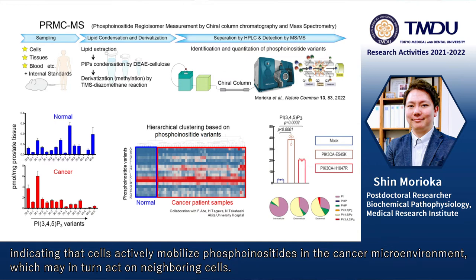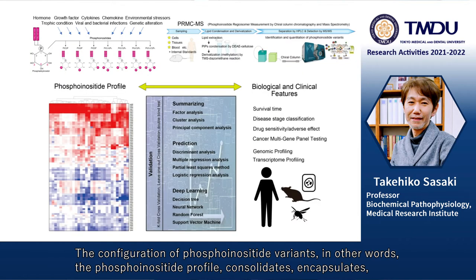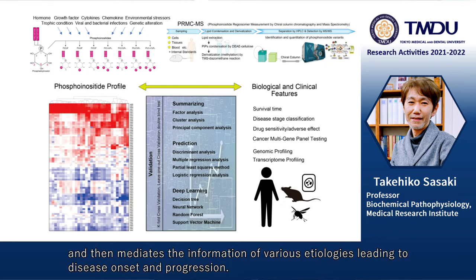indicating that cells actively mobilize phosphoinositides in the cancer microenvironment, which may in turn act on neighbouring cells. The configuration of phosphoinositide variants — in other words, the phosphoinositide profile — consolidates, encapsulates, and mediates the information of various etiologies leading to disease onset and progression.